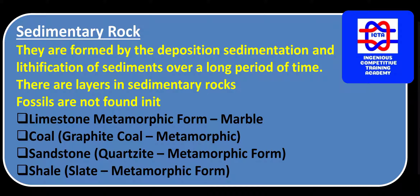Limestone has a metamorphic form, which is marble. Coal — graphite is the metamorphic form of coal. Sandstone — quartzite is the metamorphic form of sandstone. Similarly, slate is the metamorphic form of shale. Friends, these are very important to remember.